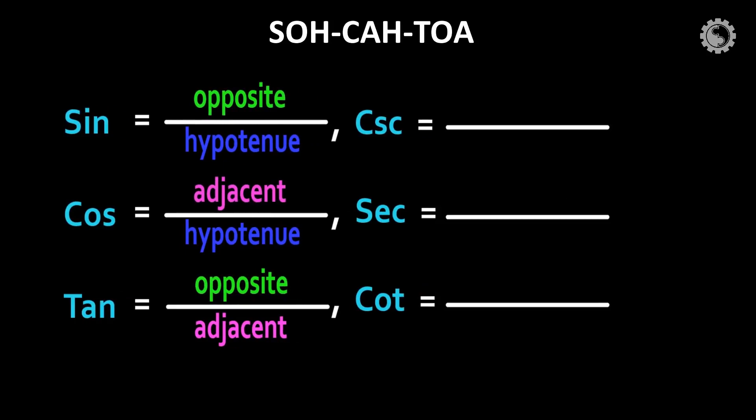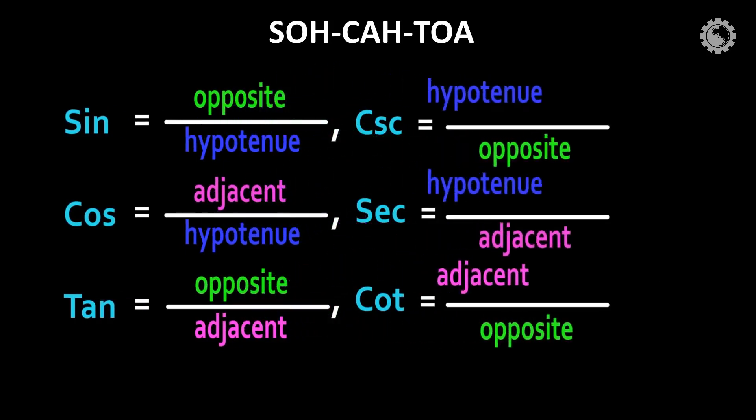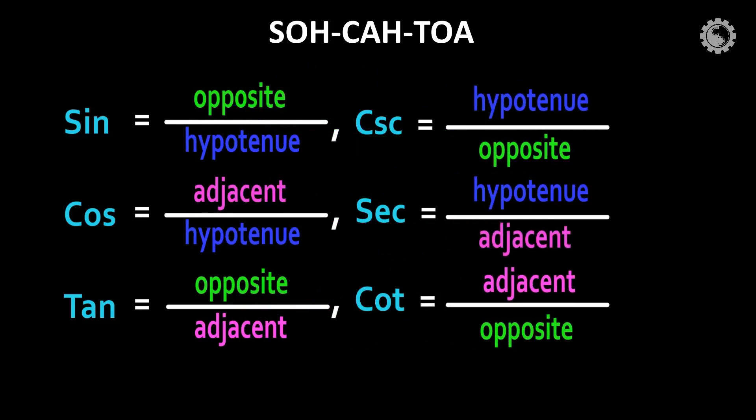Also the reciprocals of these ratios are cosecant, secant, and cotangent. Reciprocal of sine is cosecant. Reciprocal of cosine is secant. Reciprocal of tangent is cotangent.